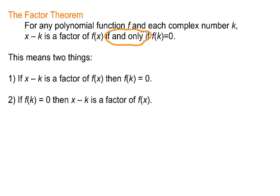This Factor Theorem actually means two things. First, if x minus k is a factor of f(x), then f(k) is 0. But it also means that if f(k) equals 0, then x minus k is a factor of f(x). You can read it both ways.